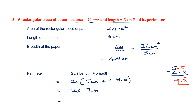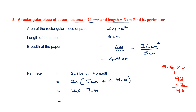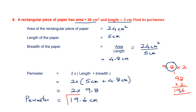Let's multiply 2 into 9.8, or 9.8 into 2. That will be 98 into 2 when we remove the decimal point. 2 eights are 16, carry 1. 2 nines are 18 plus 1 is 19. So 196. But when we go back to the question, there is one decimal place, so our answer also should have one decimal place — that becomes 19.6. So we have found the perimeter to be 19.6 centimeters.